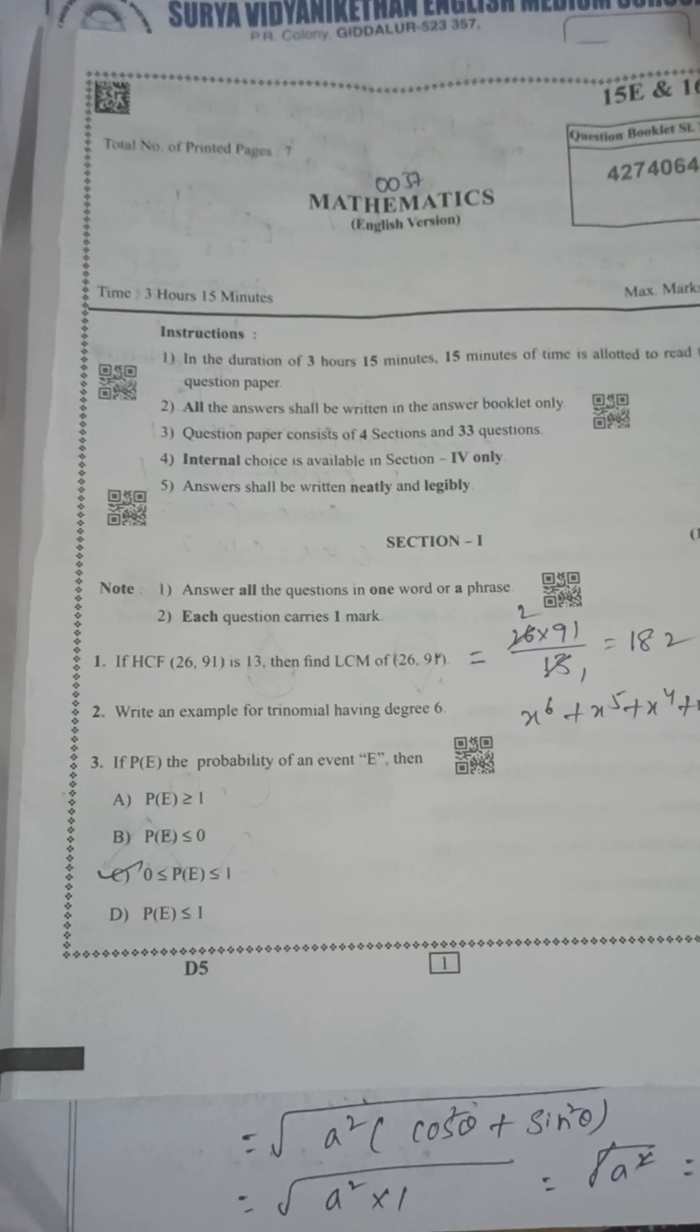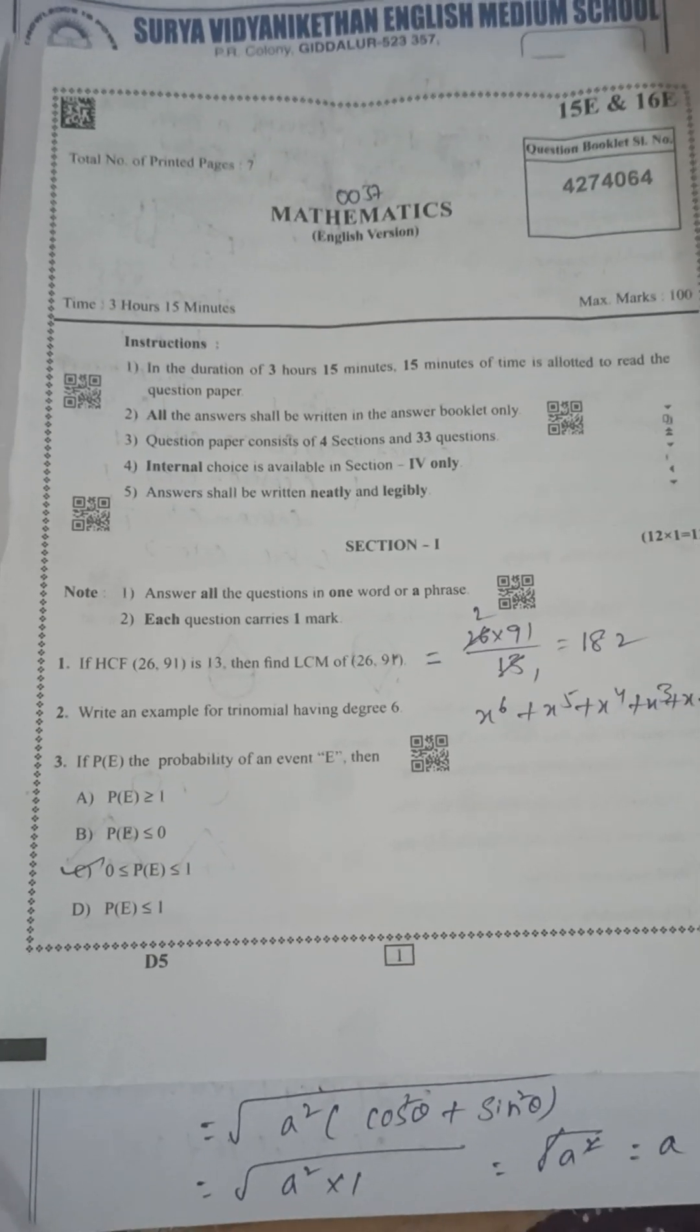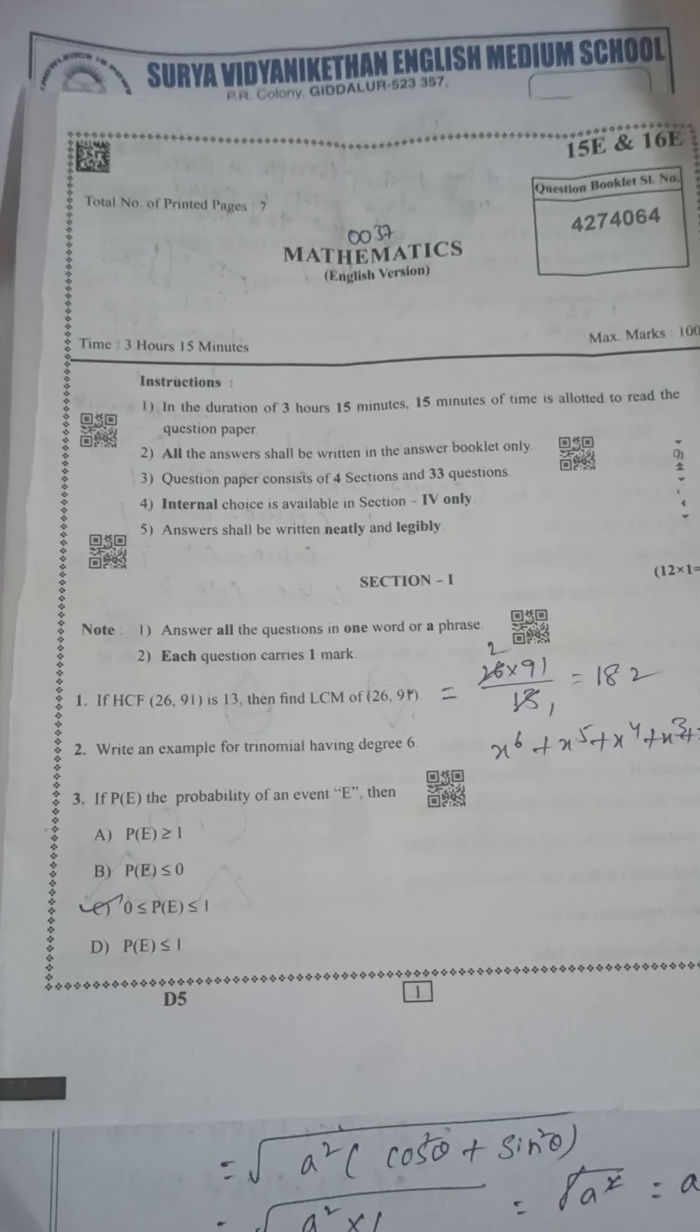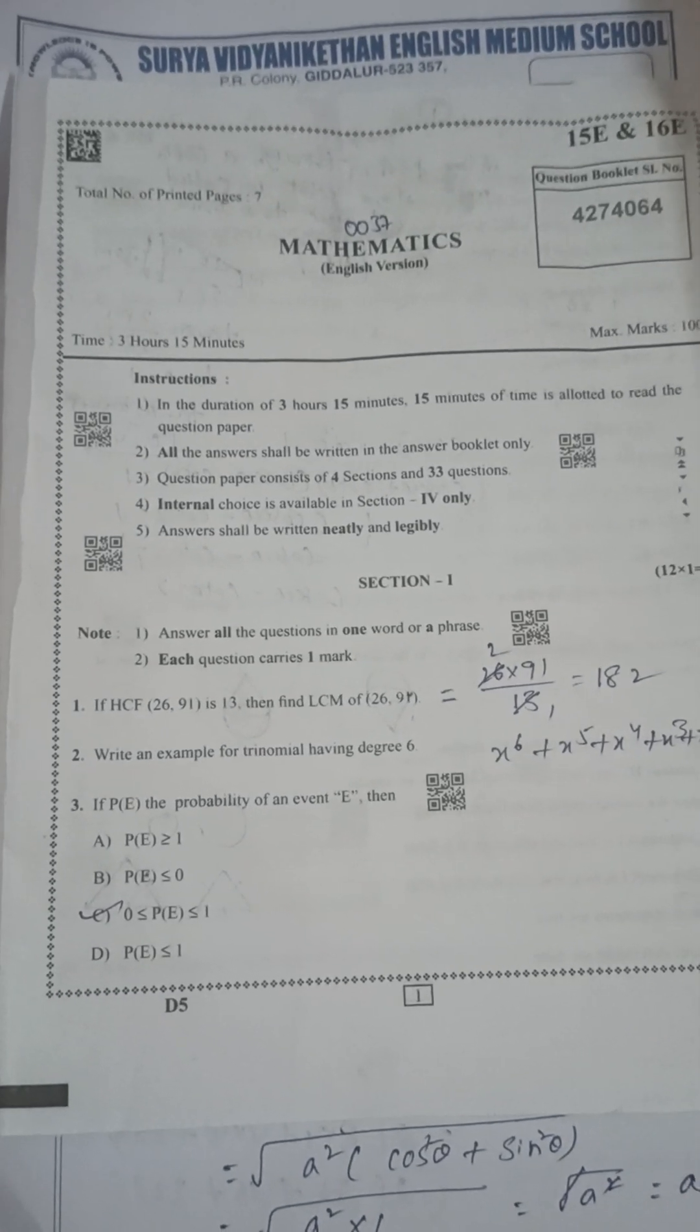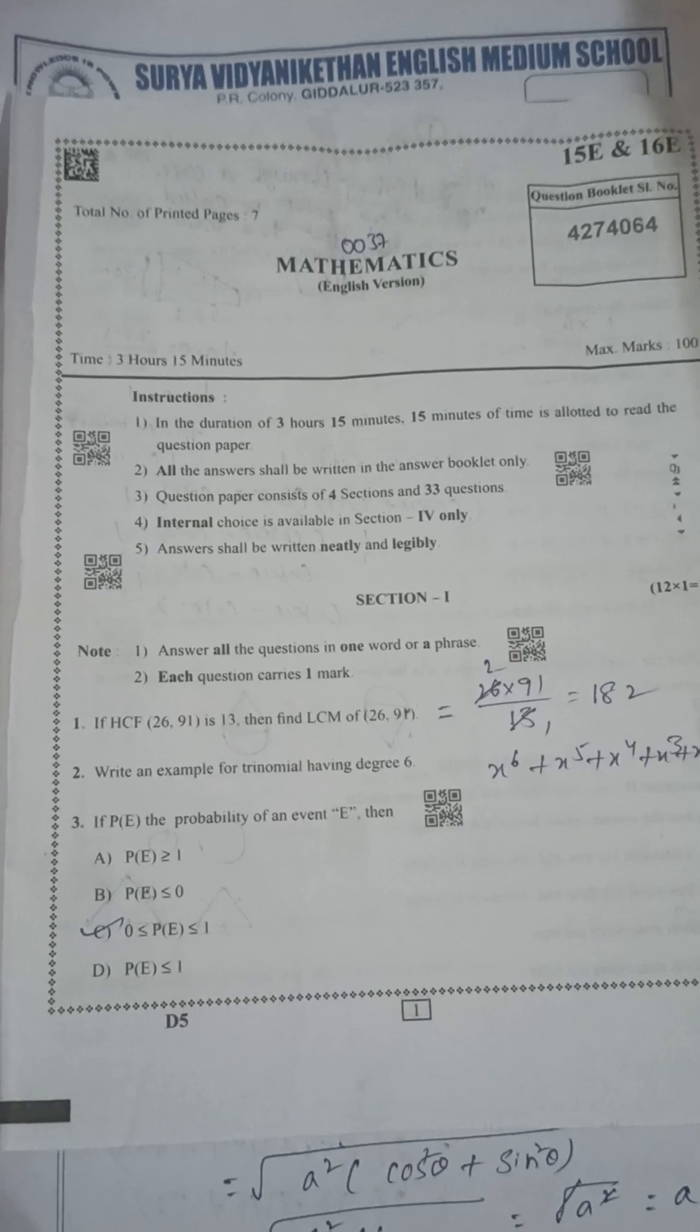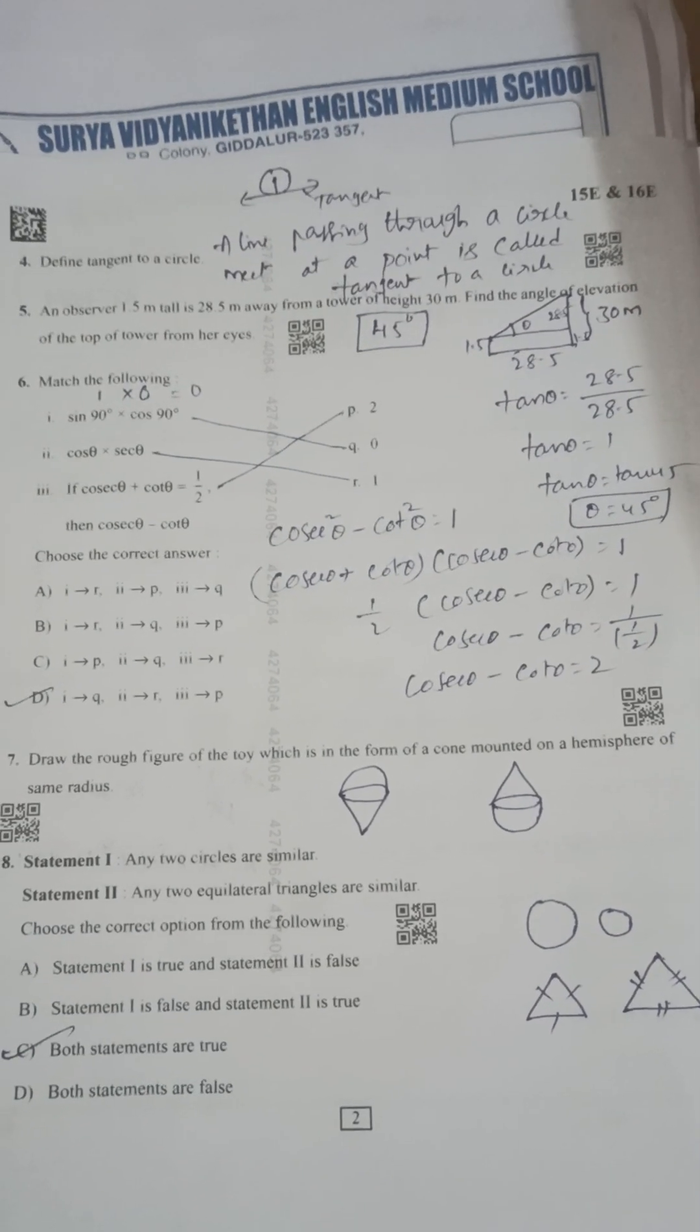Next, write an example for trinomial having degree 6, degree 6 polynomial. Next, if P of E is the probability of an event, then 0 less than or equal to P of E less than or equal to 1.